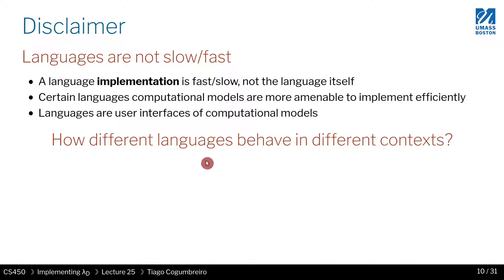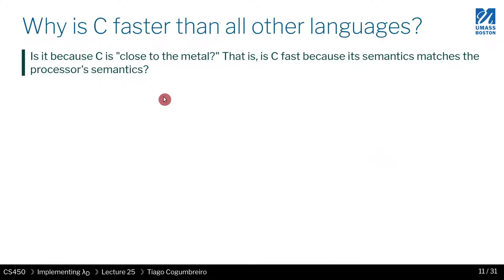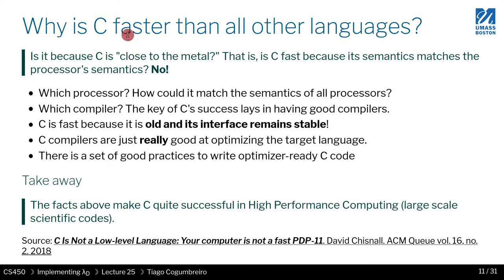How do different languages behave in different contexts? People usually say C is very close to metal, that's why it's fast. In terms of GPUs, you can have a language very close to the hardware design. But in fact, it's not really true for C, because C runs on almost all hardware — so how could it be designed to match the execution model of all hardware? You also have to think about which compiler you're referring to, since the language depends on its implementation.